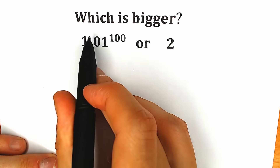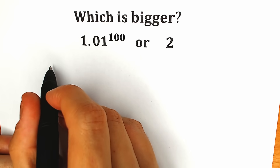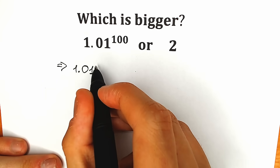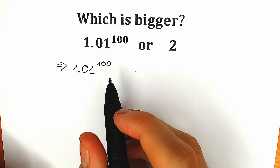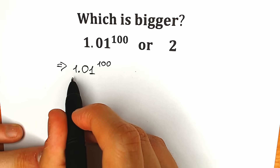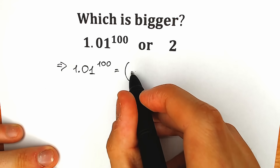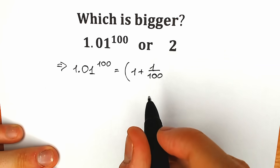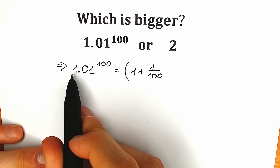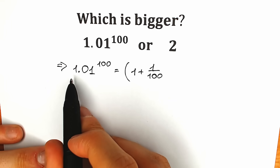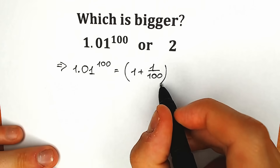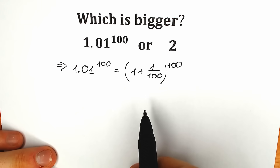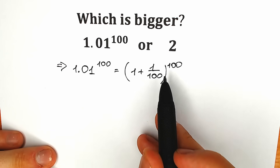So first of all let's look closely at this expression on the left side. We have 1.01 to the power 100. Let's try to rewrite it in another way. We can write 1.01 as 1 plus 1 over 100, since 1 over 100 equals 0.01. And don't forget about our power — we have 100 as the power, which means we multiply these parentheses by each other 100 times.